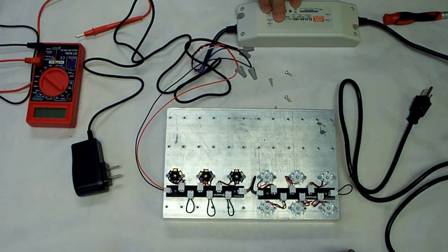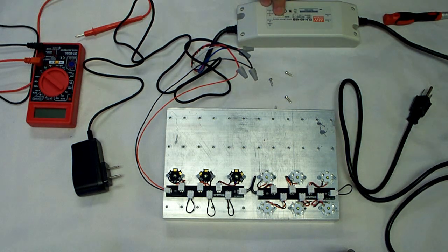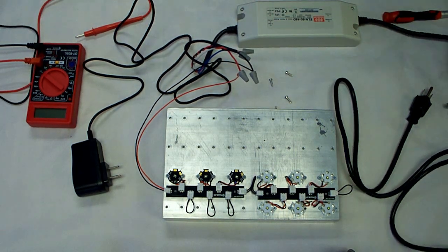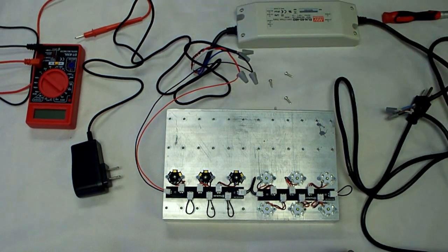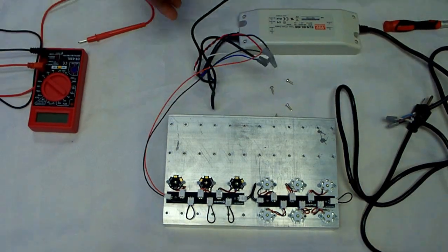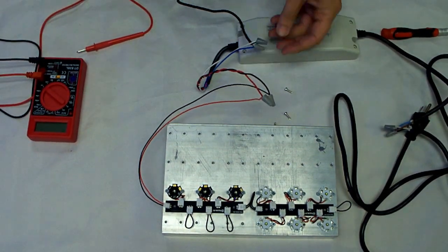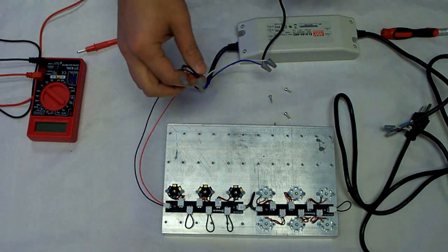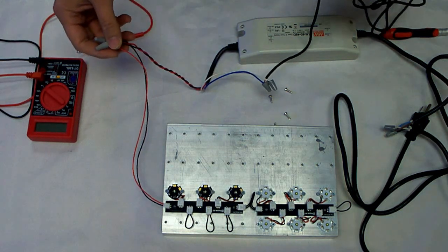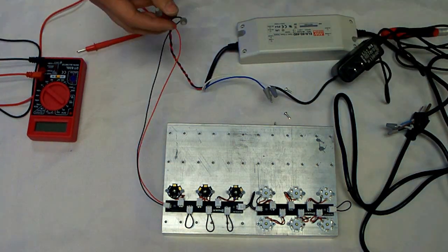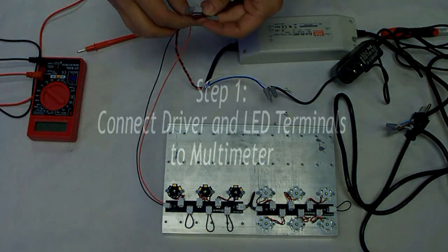It's the same process for any of the Meanwell ELN dimmable drivers. We've hooked it up to a power cord already, wired in the 10-volt adapter to the blue and white dimming wires, and then connected the driver to the LEDs via the driver jumper.